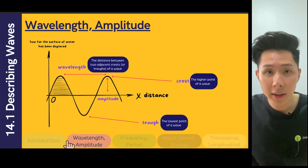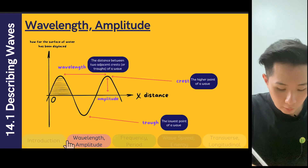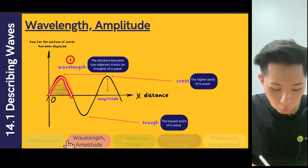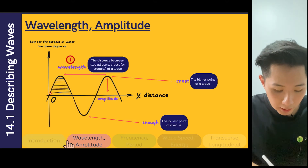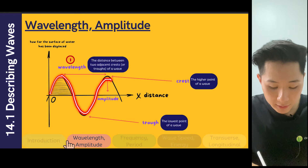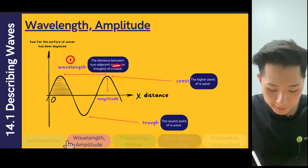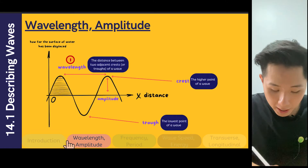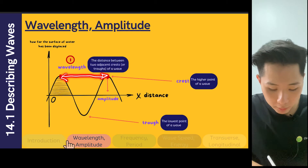Here are some properties you need to know to understand waves better. First is called the wavelength. In a water wave, the water rises up to the highest point and then goes down and back to the highest point again. The wavelength represents the distance between two adjacent crests. The crest is the highest point of the wave, so the distance between two crests is called the wavelength.